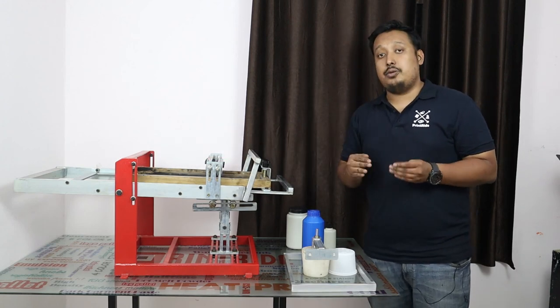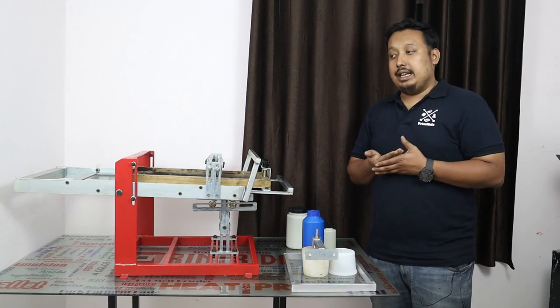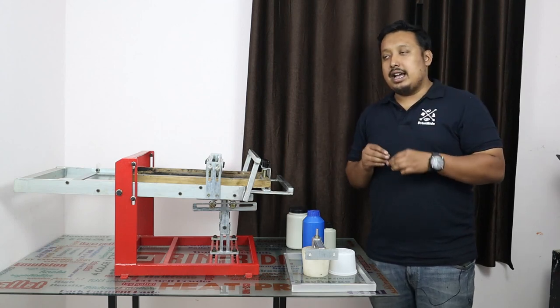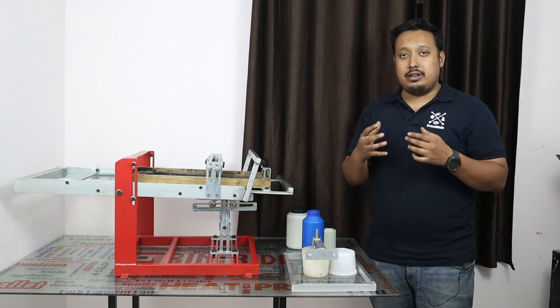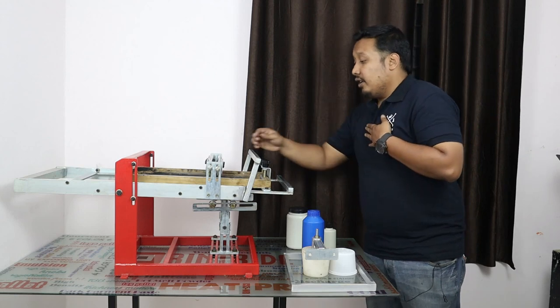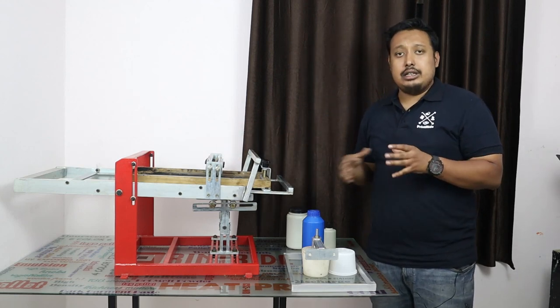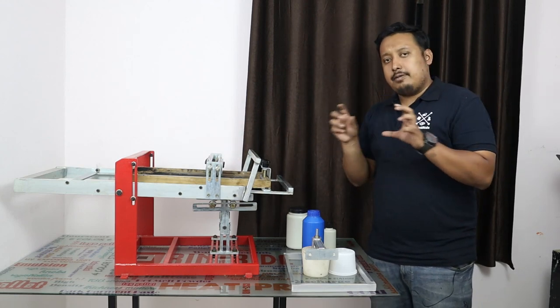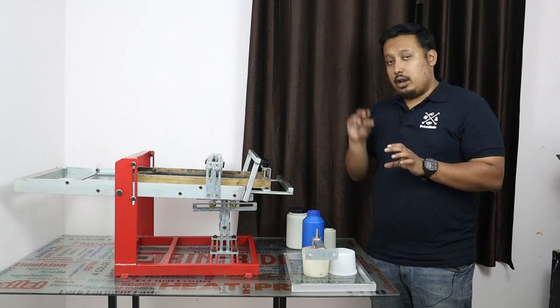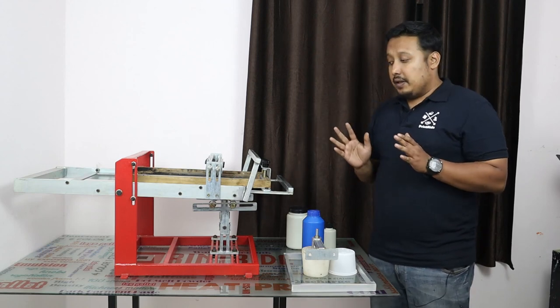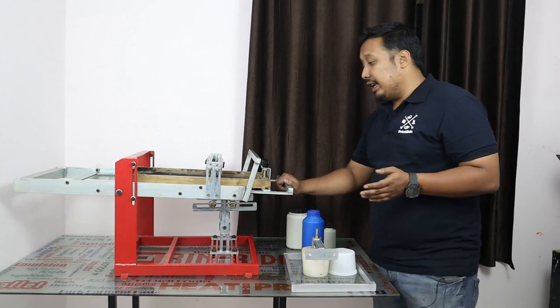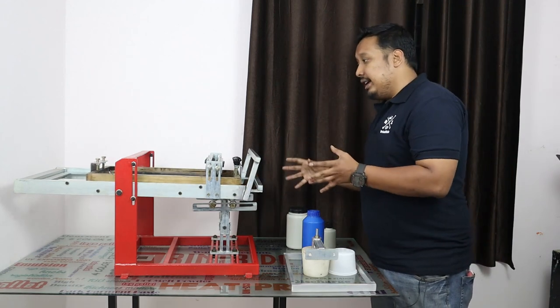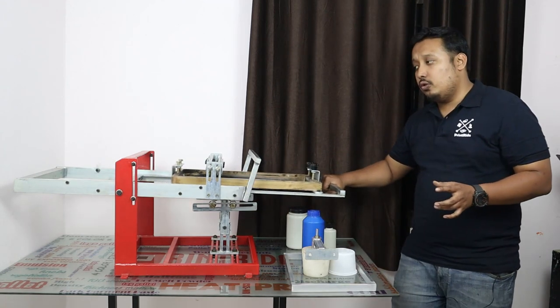This is to make the squeegee up and down if you have bigger size or smaller size. We also have slot cuts here so you can move your squeegee left, right, or up and down as convenient. You have roller bearings here so it will give a smooth flow to your printing experience.